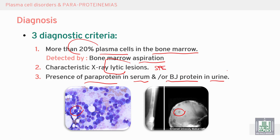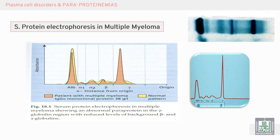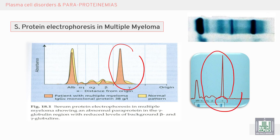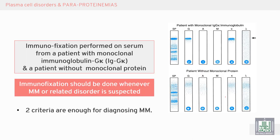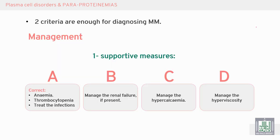And urine electrophoresis. Serum protein electrophoresis shows a monoclonal band in the gamma region. Immunofixation is a confirmatory test to find out the type of immunoglobulin — the monoclonal immunoglobulins and light chains. Two criteria are enough for diagnosing multiple myeloma.